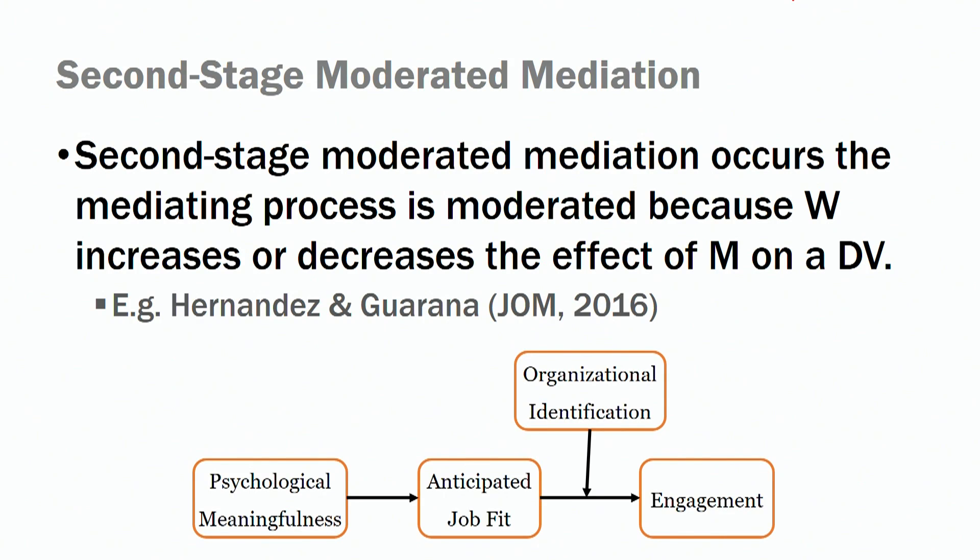One example we have here, different from examples we've been using so far, is a paper published in the Journal of Management in which we look at the relationship between psychological meaningfulness and engagement via anticipated job fit. We theorize that anticipated job fit would interact with organizational identification to predict job engagement.